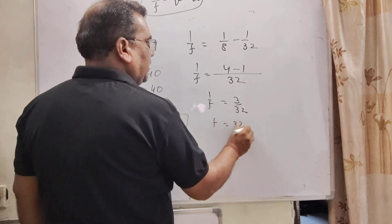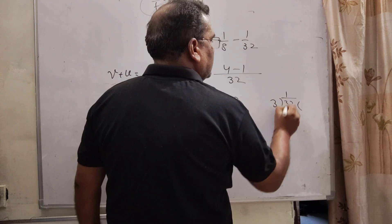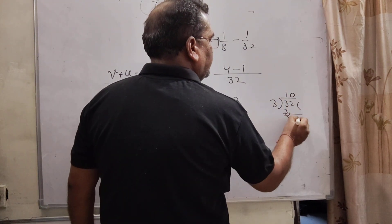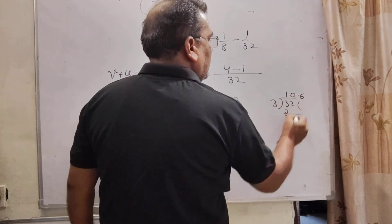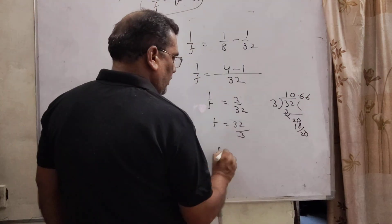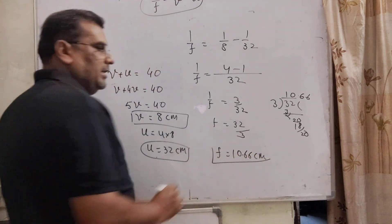Then F equal to 32 by 3. Then 3 into 10 is 30, carry 2, 2 into 3 is 6, 0.3, 3 into 6 is 18. So here the focal length is 10.66 centimeter is the correct answer.